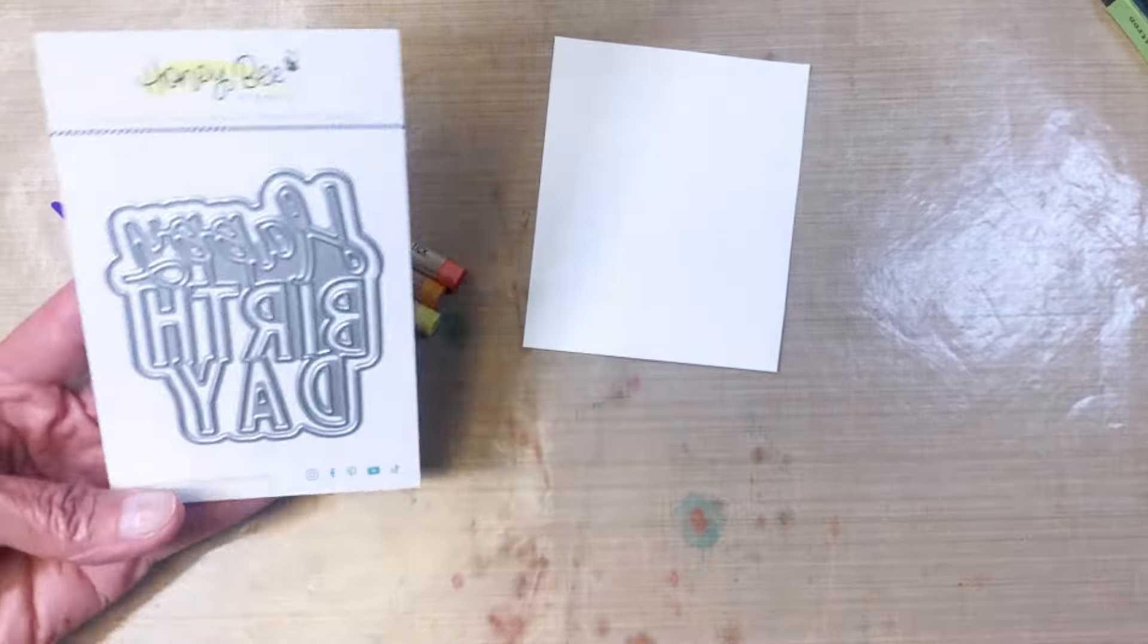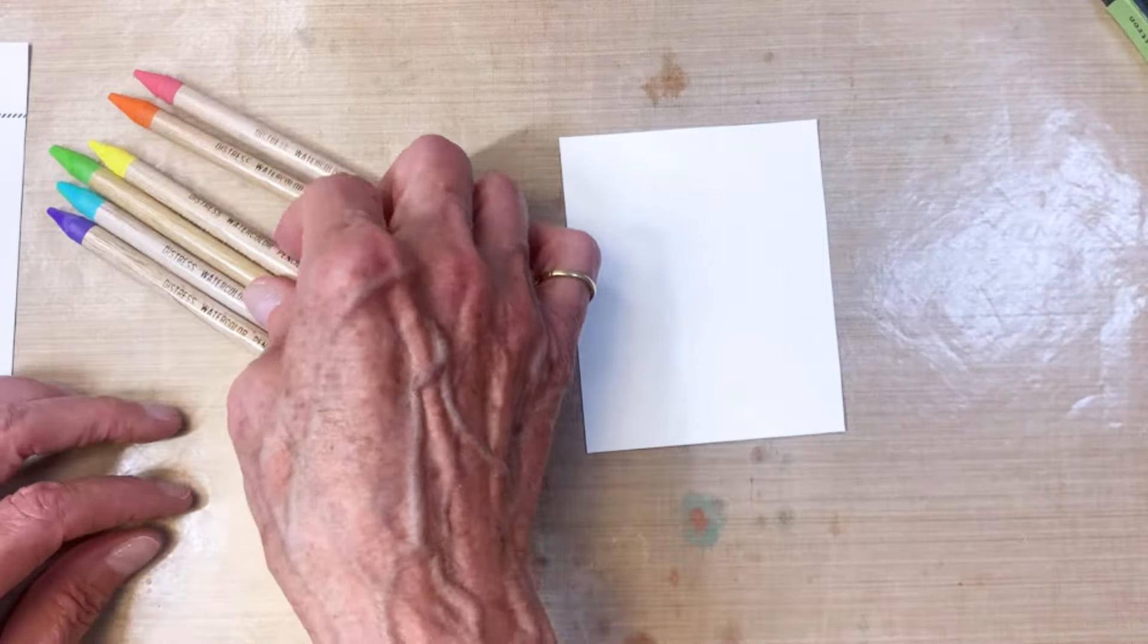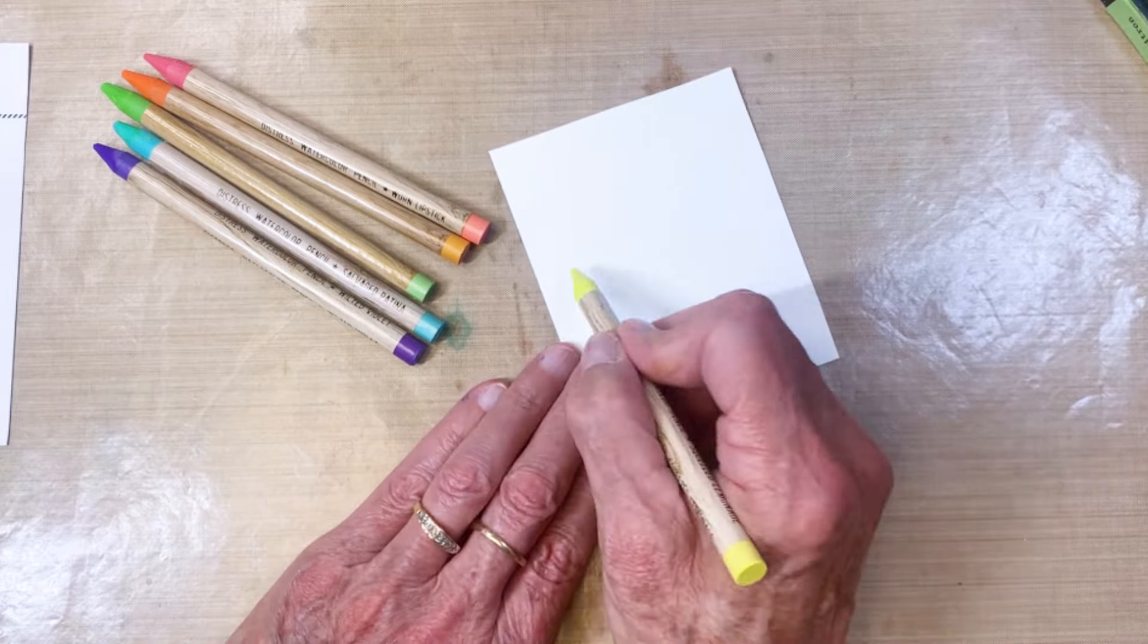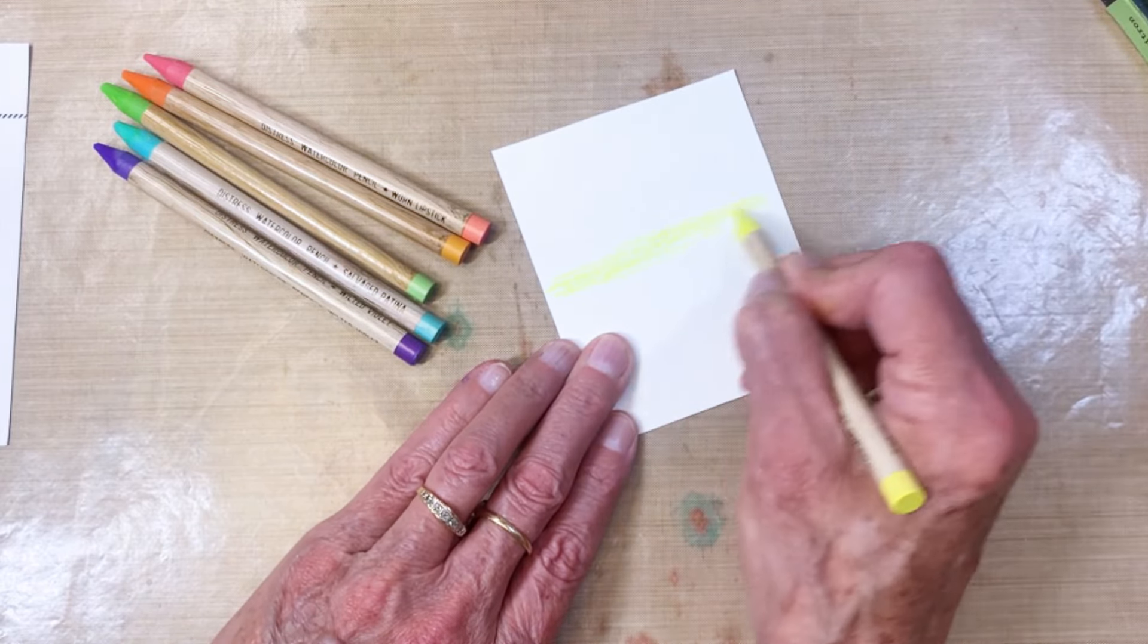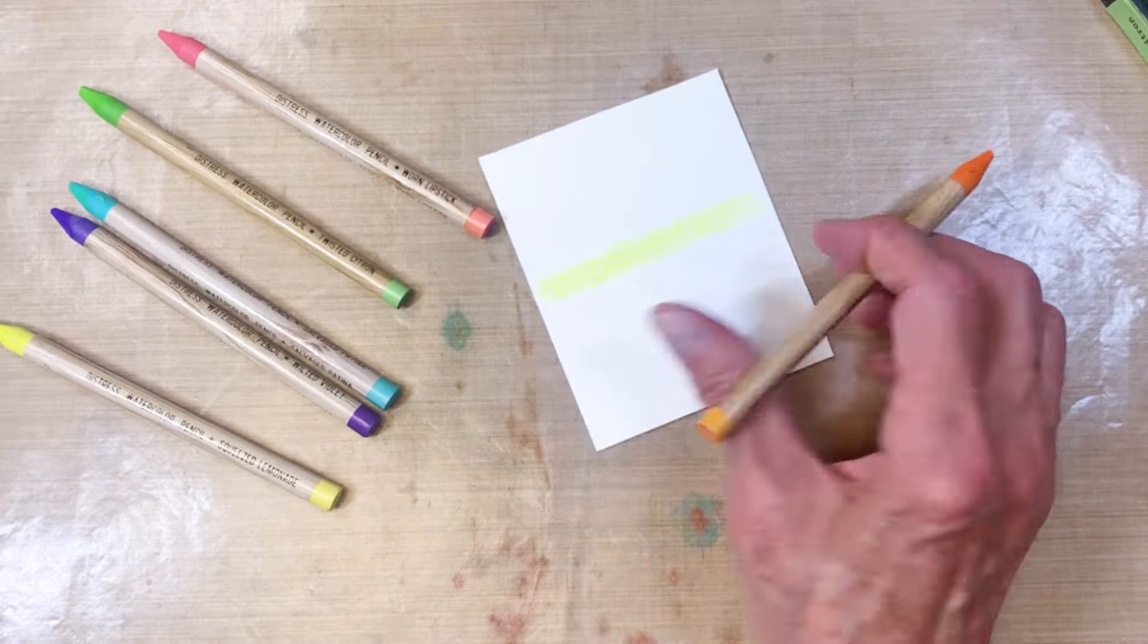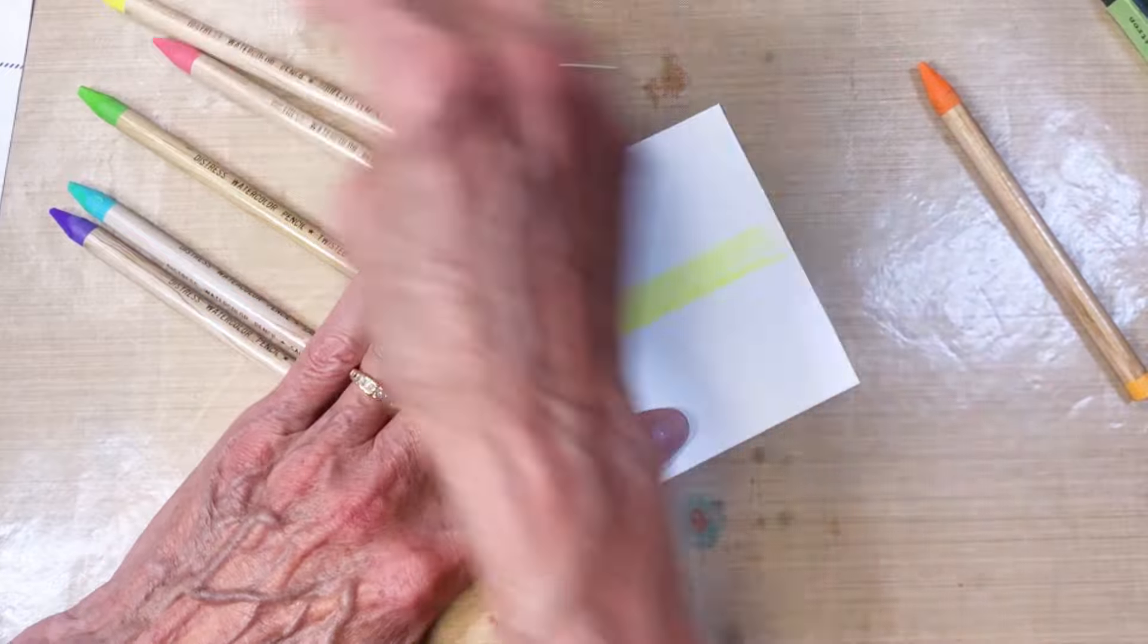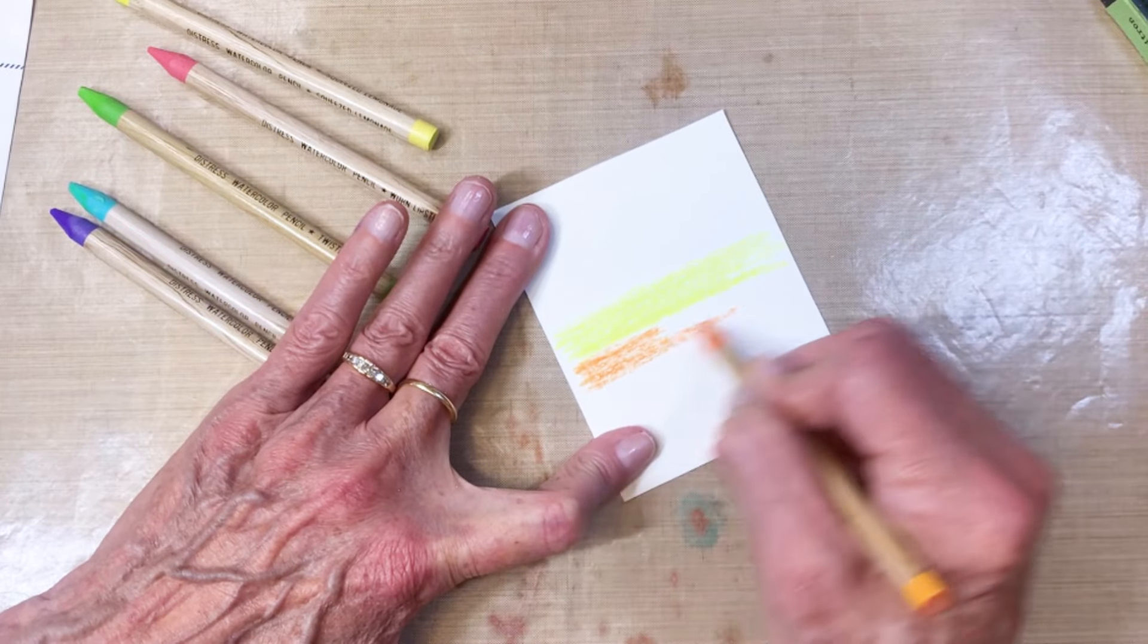For the final card I'm doing a bunch of steps here. This is going to go on the black background. What I wanted to do was a rainbow happy birthday. I'm pulling out my watercolor distress pencils. These things are great.